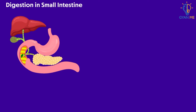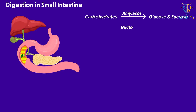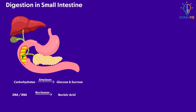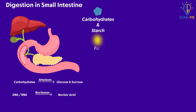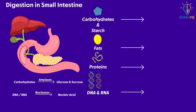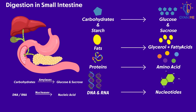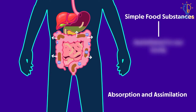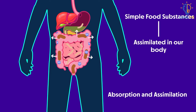Other enzymes like amylases convert smaller carbohydrates to glucose and sucrose. Nucleases digest nucleotides of DNA and RNA to simple nucleic acids. With this, the process of digestion ends in the small intestine. At the end of digestion, complex molecules like starch, carbohydrates, fats, proteins, and DNA and RNA are broken down into smaller molecules, which are easily absorbed and assimilated in our body via blood.